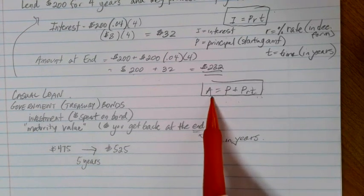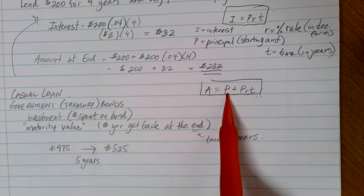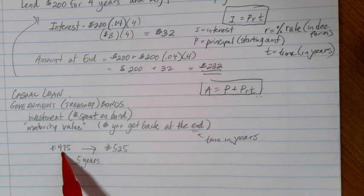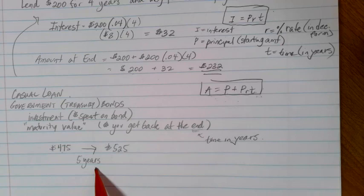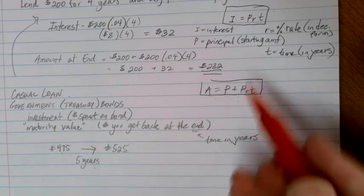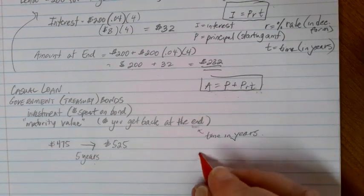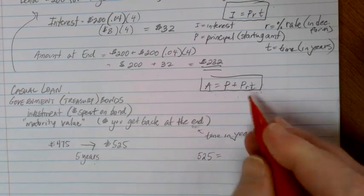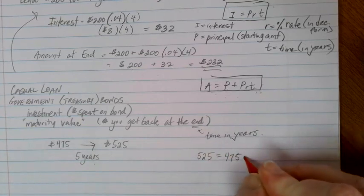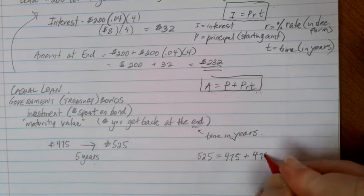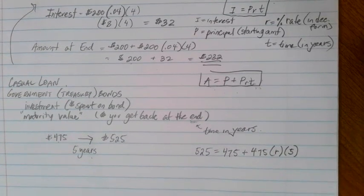In this case, A is the amount I end up with, which is the $525. P is the principal or starting value, which is this $475. And T is the number of years, and in this case, it's the five years that are the condition of the loan. So I can just put all of that information into my formula. So A, 525, is equal to P, which is $475, plus P again, $475, times R, times T, which in this case is the five years that we have.